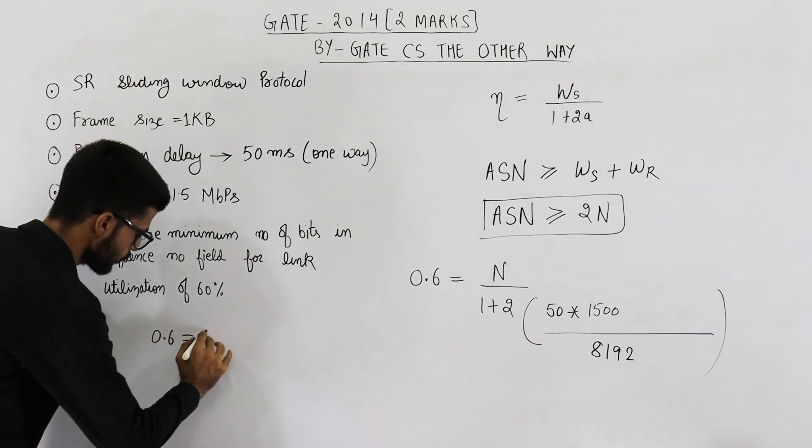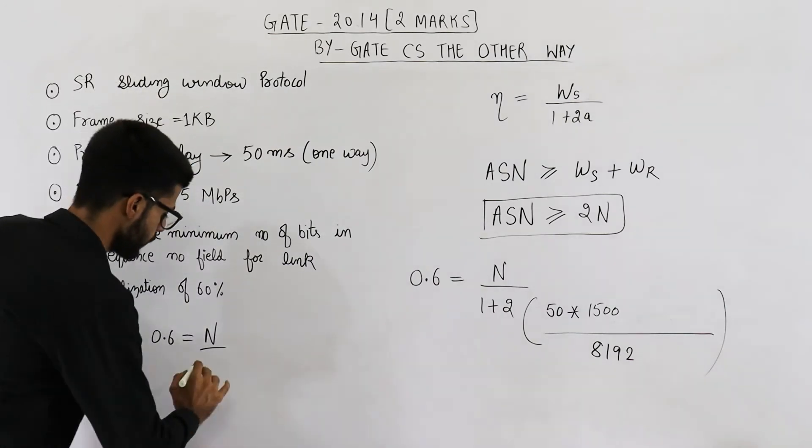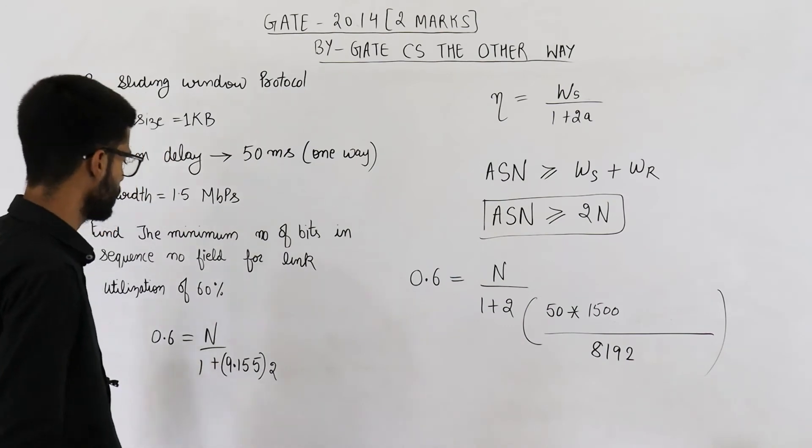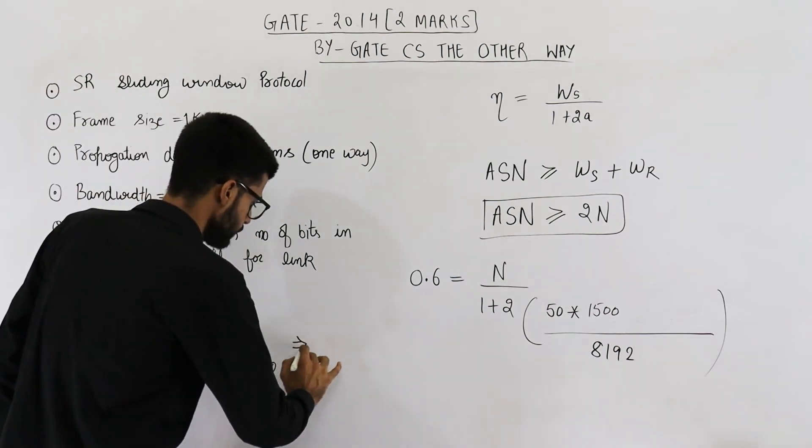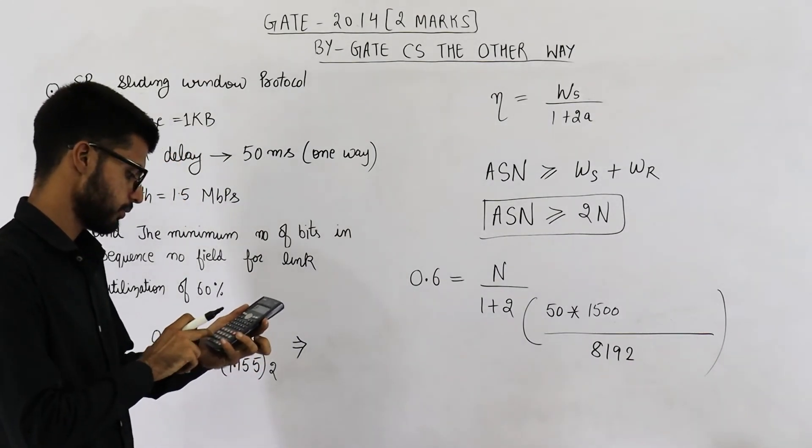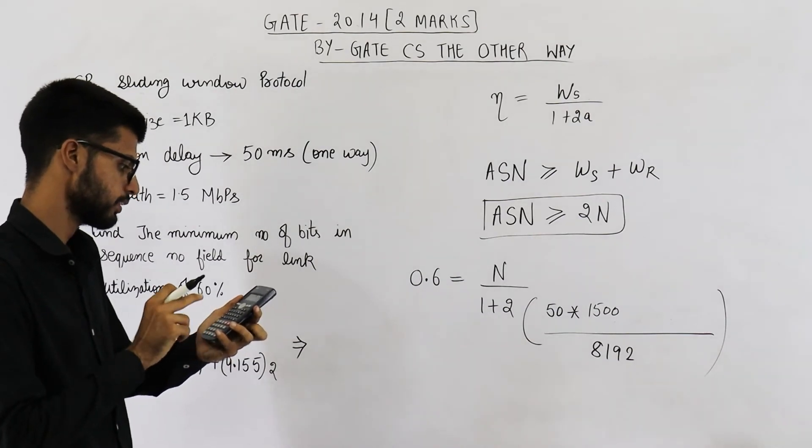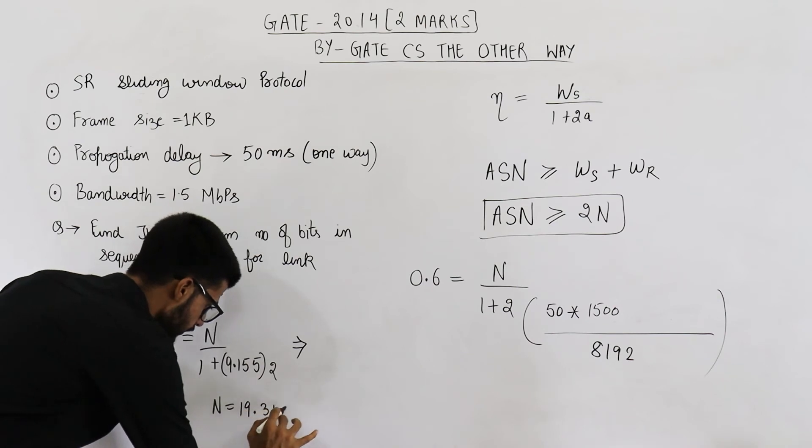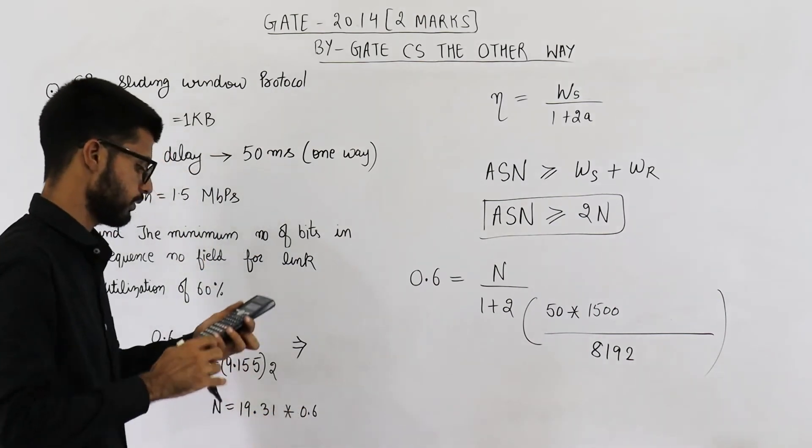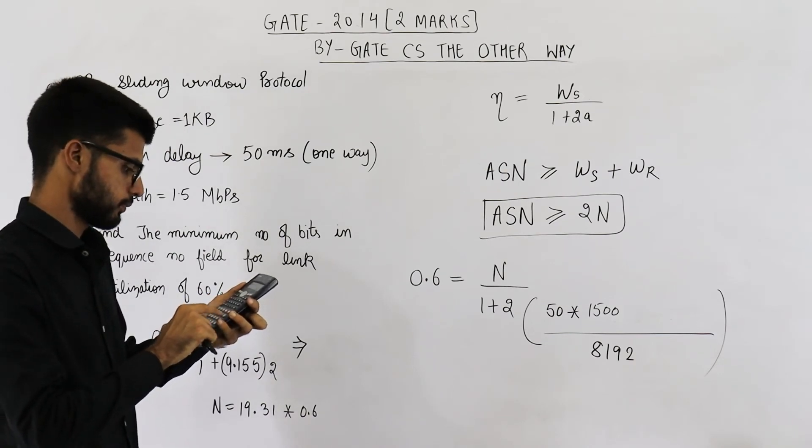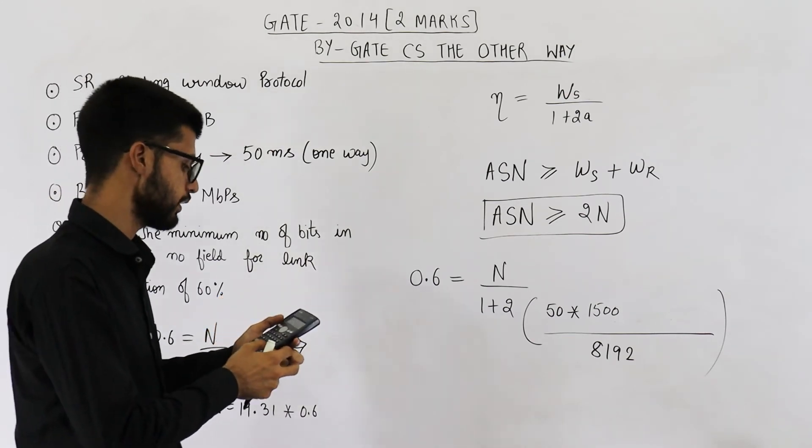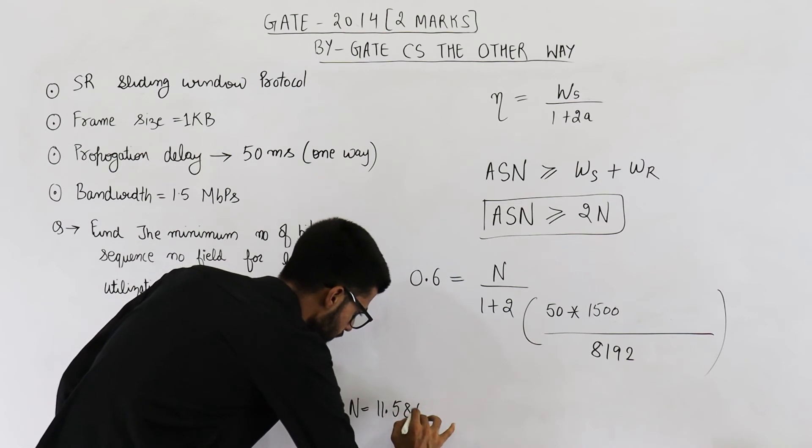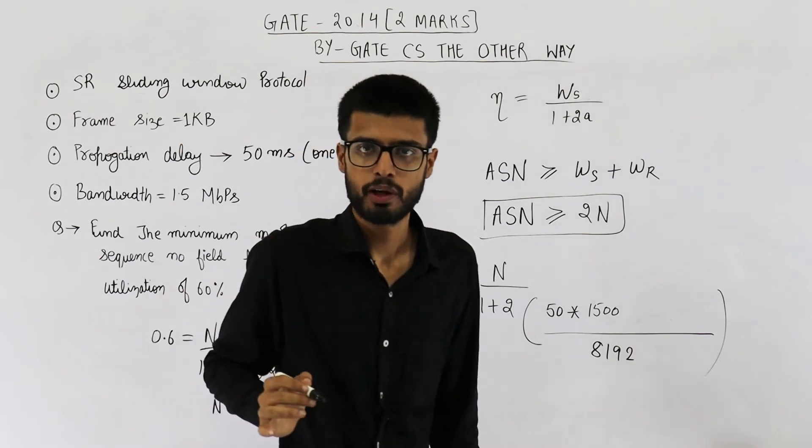It is 0.6 is equal to n upon 9.155 into 2 plus 1. Now from here you can find the value of n. So n will be 9.155 into 2, this is 18.31 and plus 1 will be 19.31. So n is 19.31 multiplied by 0.6. This is 11.586. So the value of n is 11.586. That means sender window size is 11.586.